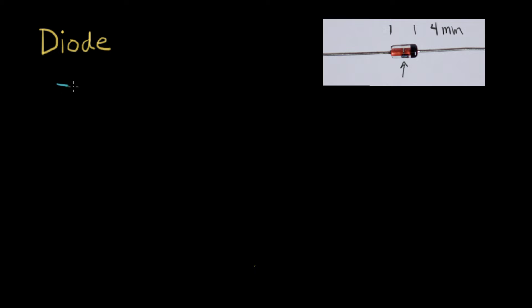A diode is something that conducts current in one direction and does not conduct current in the other direction. The symbol we use for a diode has this big arrow here that points in the direction of the forward current.